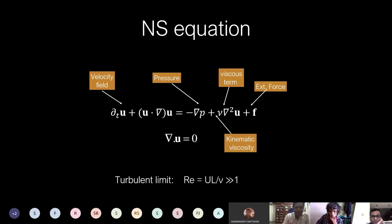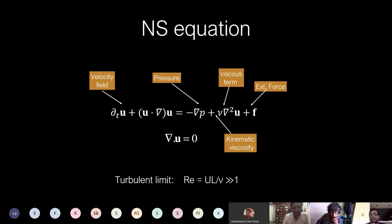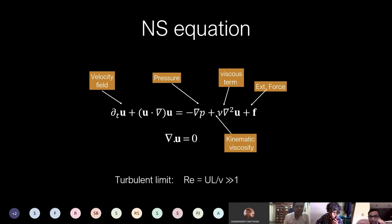The Navier-Stokes equation is Newton's law for the velocity field. Here u is the velocity field, p is the pressure gradient. We need a viscous term and an external force. For Navier-Stokes, the external force could be stirring a cup of coffee with a spoon. We assume incompressibility for today's talk. So we need viscosity and external forcing for Kolmogorov theory.